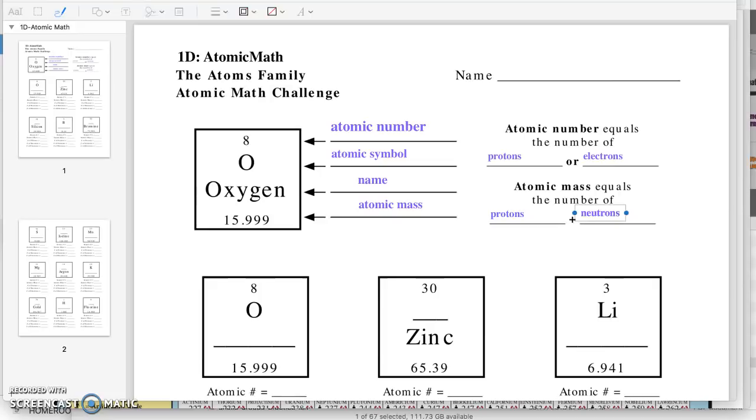So in section 1c, before you did this, you got a chance to build some atoms on your iPad on the FET site. So you got to see what they look like. You got to see that the protons and the neutrons are in the middle of the atom in what we call the nucleus. And the electrons orbit around the outside.